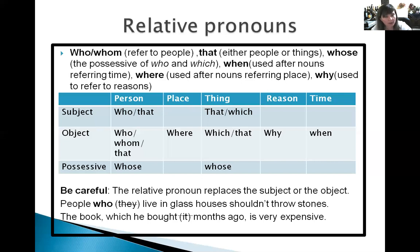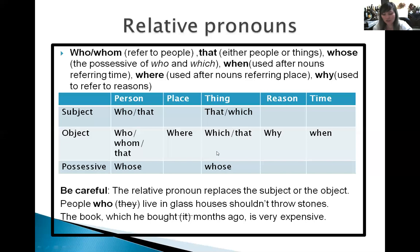But we have to be careful: the relative pronoun replaces the subject or the object, but it does not replace both of them. For example: 'People who live in glass houses shouldn't throw stones.' We cannot say 'people who they live' — use either the subject or the object. Similarly: 'The book which he bought months ago is very expensive,' but we can't say 'the book which he bought it' — that's wrong.